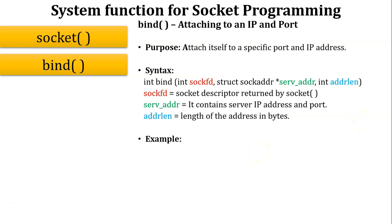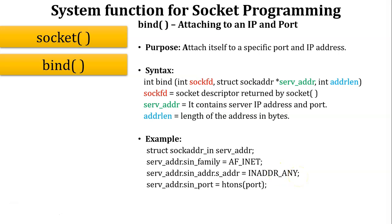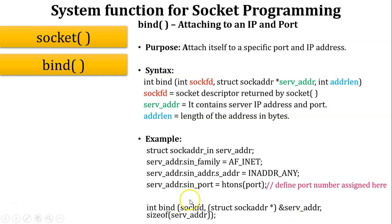In programming, first create a structure sockaddr_in with a member server_address. Assign AF_INET to specify IPv4, then store the server IP address and port number into the structure variable (the port number is defined at the start of the program). Then write the bind function: int bind(sockfd, server_address, sizeof(server_address)), where server_address holds both the IP address and port number.